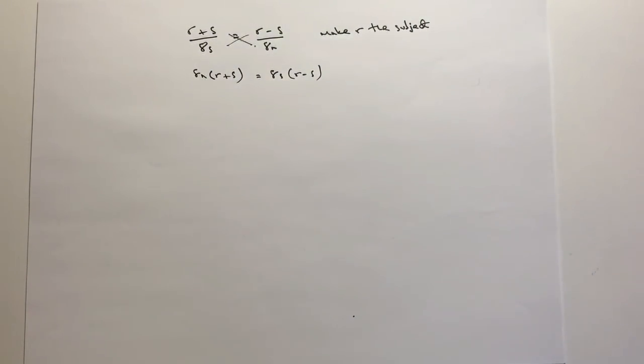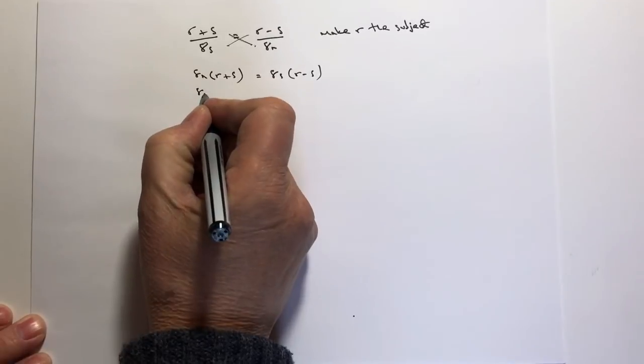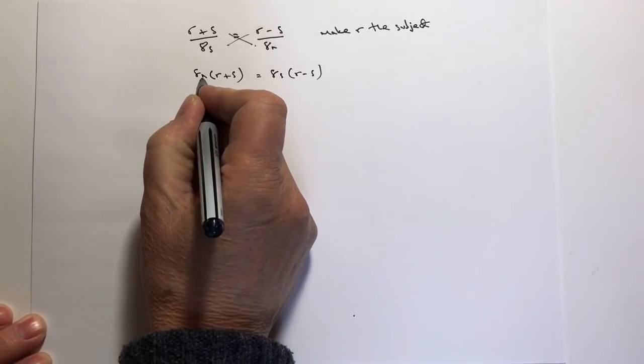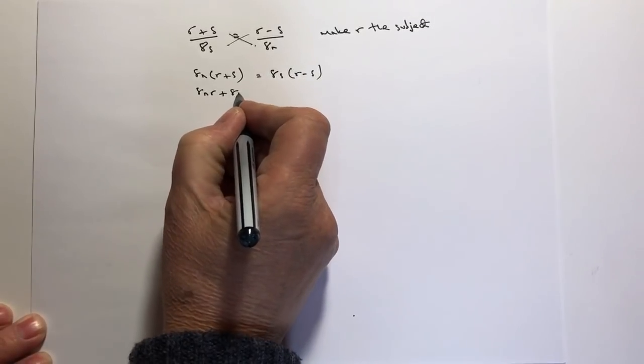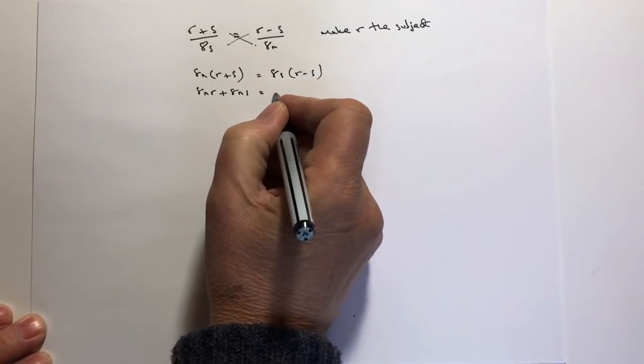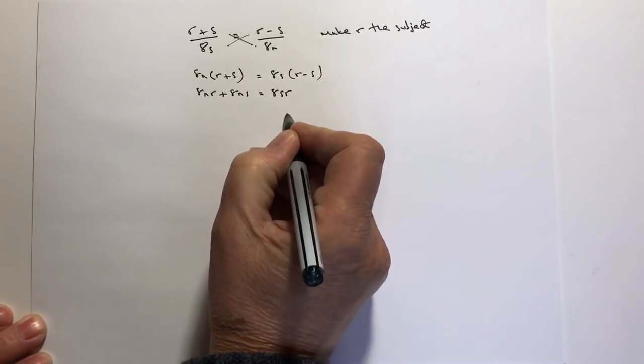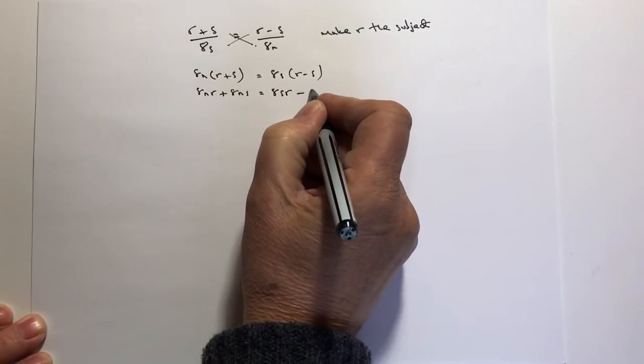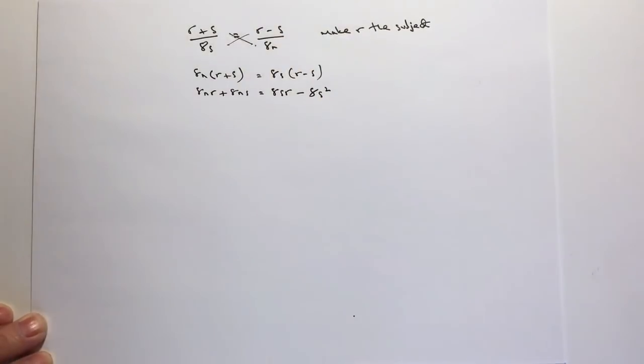And then it's going to be a case of multiplying these out. So if I multiply 8n by r, I get 8nr, and then multiply 8n by s, and I get plus 8ns, and that equals the same as 8s times r, and then minus 8, and it's s times s, which is the same as saying s squared.